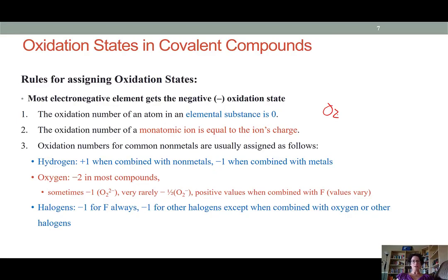Second, the oxidation number of a monatomic ion is equal to the ion's charge. So this is what we were looking at in the last slide. So if we have O2 minus, then the oxidation number is negative 2.